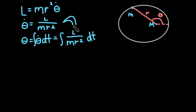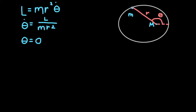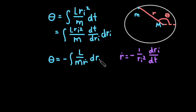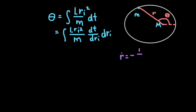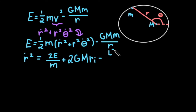If we define a variable r-inverse so that r-inverse is equal to the inverse of r, we can rewrite the integral as l over m times r-inverse squared dt. Now r-dot is equal to negative 1 over r-inverse squared times dr-inverse dt, so theta is equal to the integral of negative l over r-dot dr-inverse.